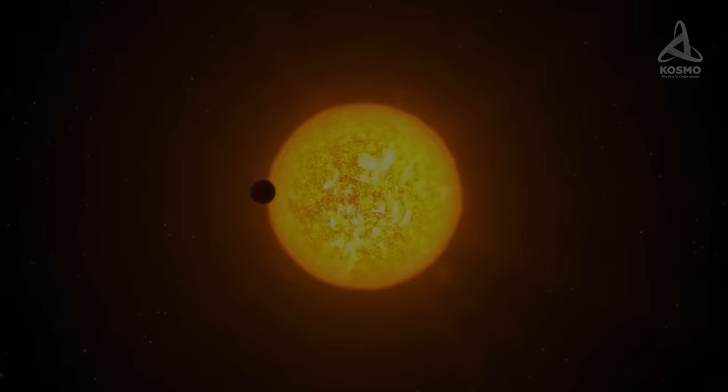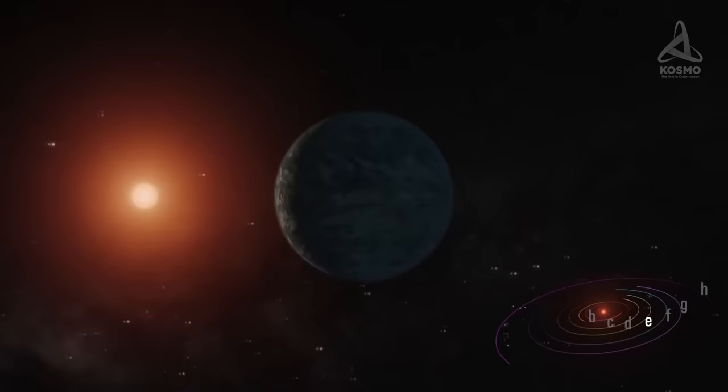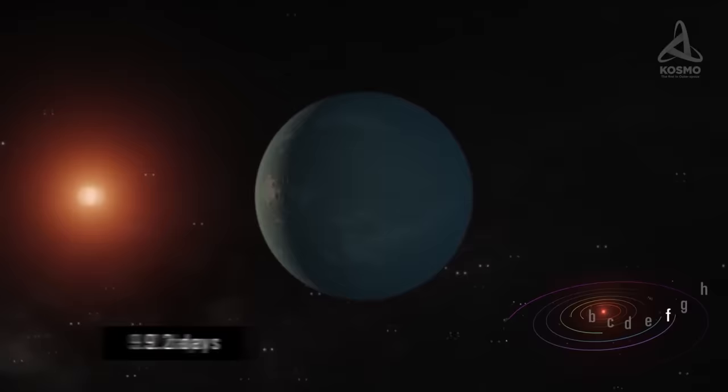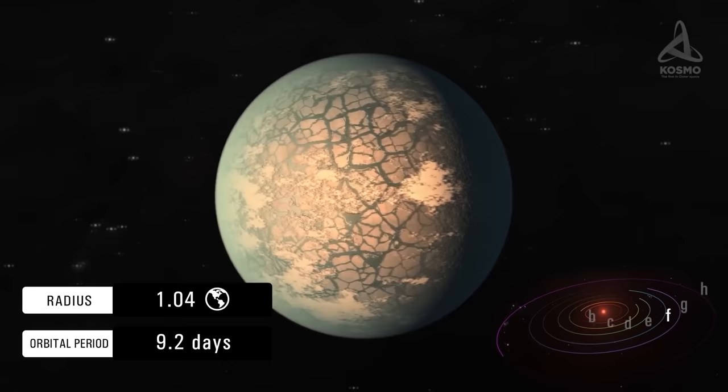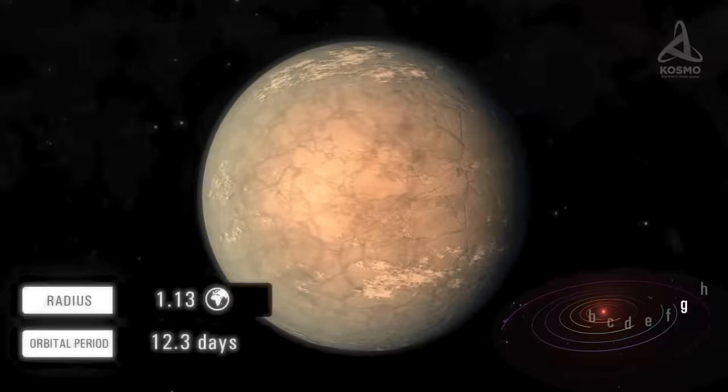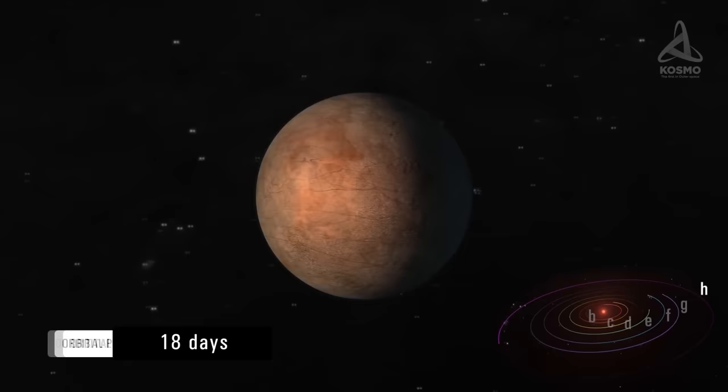It takes TRAPPIST-1d 4.05 days to orbit its star. Its radius is 0.77 that of the Earth. The orbital period of TRAPPIST-1e is 6.1 days. Its radius is 0.92 that of the Earth. The orbital period of TRAPPIST-1f may last up to 9.2 Earth days. Its radius is 1.04 that of the Earth. The orbital period of TRAPPIST-1g is 12.3 days and its radius is 1.13 that of the Earth. Last but not least, TRAPPIST-1h is the seventh object and is the furthest from its star with a rotation period of 18 days and a radius of 0.7 that of our planet.